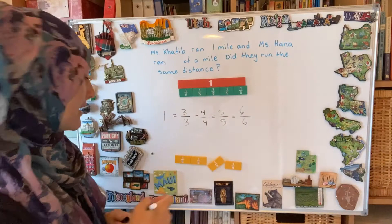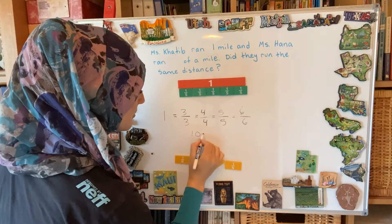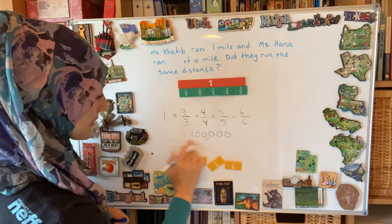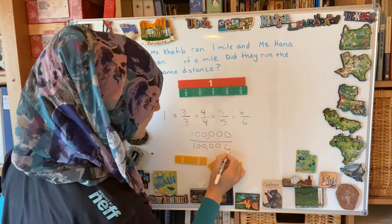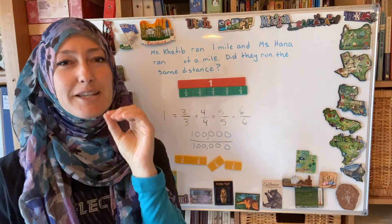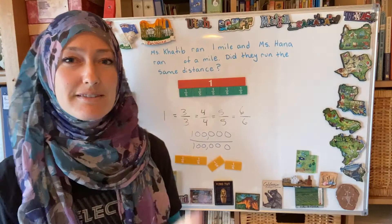You can take one whole and represent it by any number. You could represent one whole as a hundred thousand over a hundred thousand, and that would still represent one whole. What that means is you've cut that whole into a hundred thousand little tiny pieces. So that's the first part of the lesson.